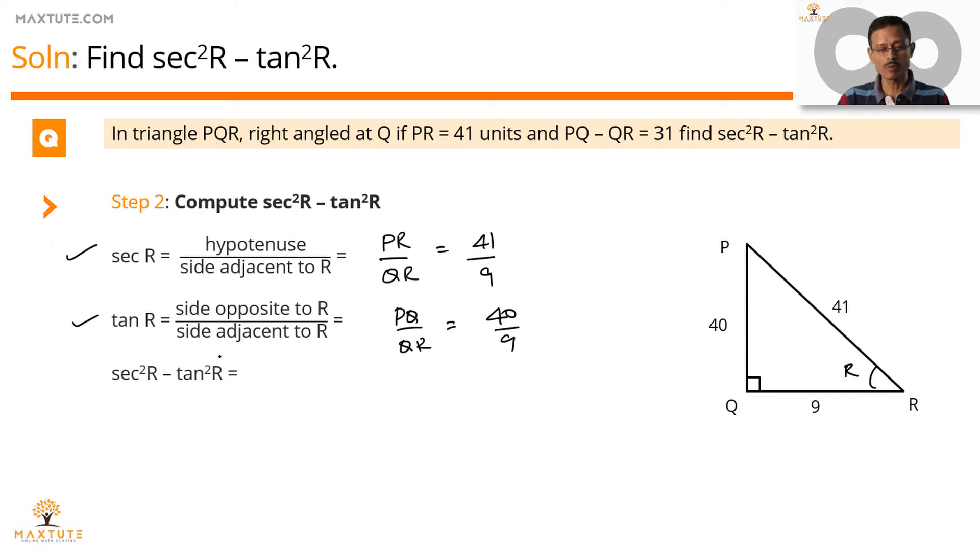If secant R is equal to 41 by 9, secant square R will be equal to 41 by 9 the whole square. Tan R equals 40 by 9. So tan square R will be equal to 40 by 9 the whole square. 9 square is a common denominator to both, so which is equal to 81. Numerator will be 41 square minus 40 square.